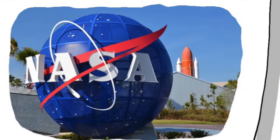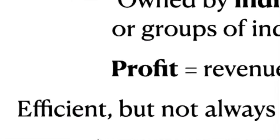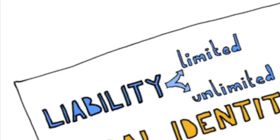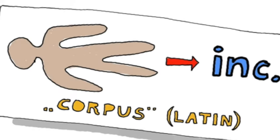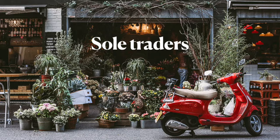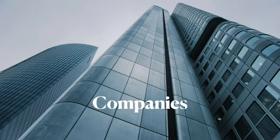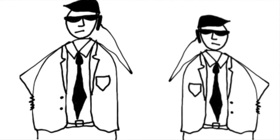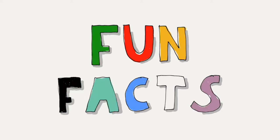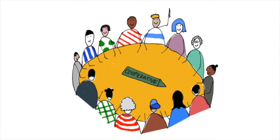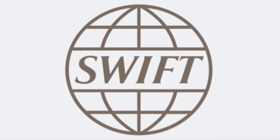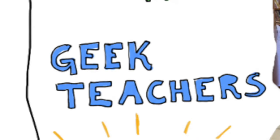This class covers: Public Sector, Surplus, BBC, NASA, Private Sector, Profit, Netflix, Liability, Legal Identity, Incorporation, Transparency, Corpus, Sole Traders, Partnerships, Sleeping Partners, Companies, BOD, CEO, AGM, EGM, IPO, Privately Held Companies, Publicly Held Companies. Fun facts about China and Lego. Social Enterprises, Cooperatives, NGOs, SWIFT, and AL3 Evaluation by Geek Teachers.